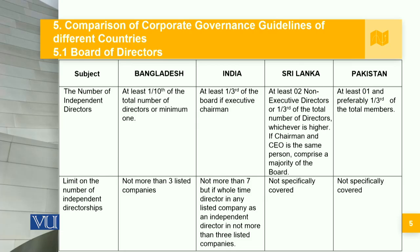Talking about the limit on the number of independent directorships, in Bangladesh not more than three listed companies. In India, not more than seven, but if a whole-time director in any listed company, then as an independent director in not more than three listed companies. While in Sri Lanka and Pakistan, it is not specifically covered. So this is a very, very important aspect — the number of independent directorships allowed and the total number of independent directors allowed on the board of directors.